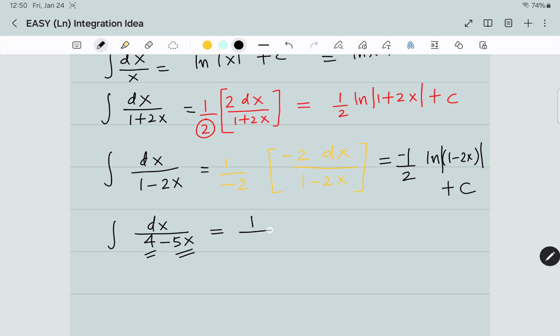I am going to adjust with 1 divided by minus 5, bracket open minus 5 times dx over 4 minus 5x. This equals negative 1 divided by 5. The derivative of 4 is 0 and the derivative of minus 5x is minus 5, so we get ln 4 minus 5x plus c.